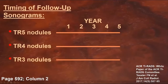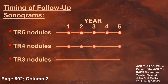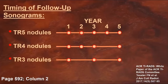What about follow-up? All the nodules that require follow-up are followed for five years, but the number of follow-up exams varies depending on the risk level. TR5 nodules are followed five times, once every year. TR4 nodules skip the year four follow-up, so they get four exams. TR3 nodules skip the two-year and the four-year follow-up, so they only get three exams.